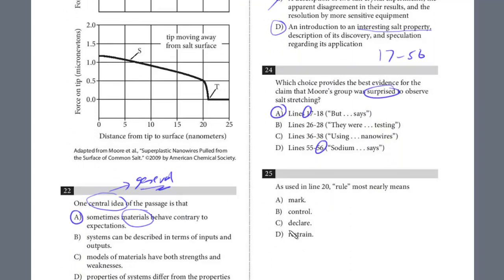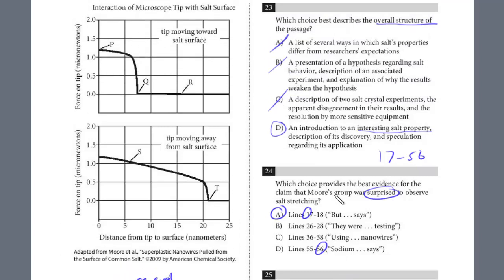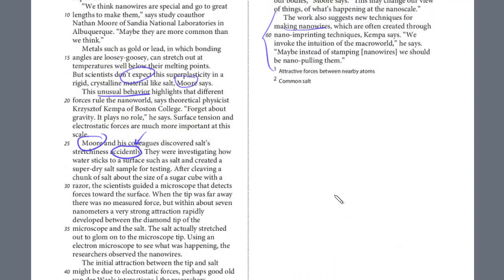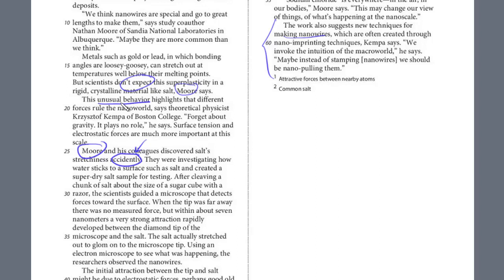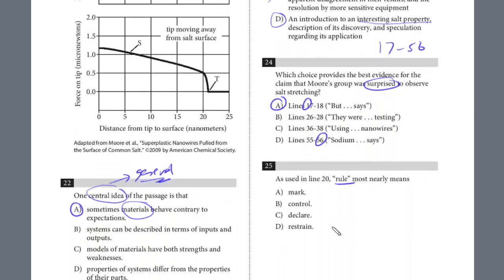We'll do the last question on this page. This is a word in context. What does 'rule' mean in line 20? So we're going to look at line 20 and try to predict it. 'This unusual behavior highlights that different forces rule the nano world.' So rule in this case means they govern or they are leading or controlling. It's control, definitely control, not mark, not declare or restrain. They are governing or controlling the nano world. Here's the answer.